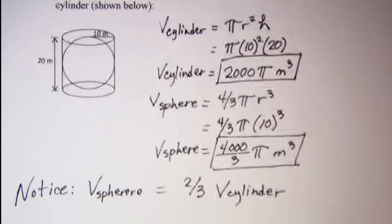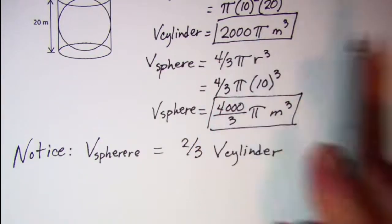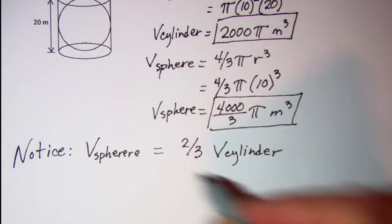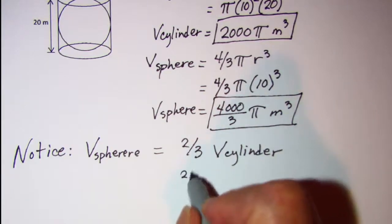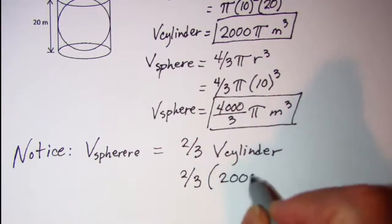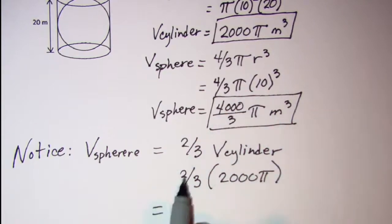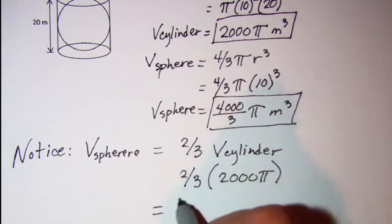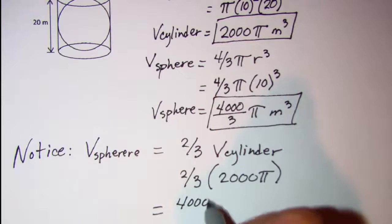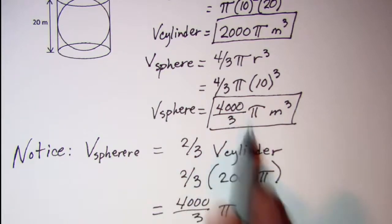Let me just show you that our cylinder has a volume of 2000 pi cubic meters. So if I actually took 2 thirds of that, I would get 2 times 2000 is 4000 thirds pi, which is the same as the volume of our sphere.